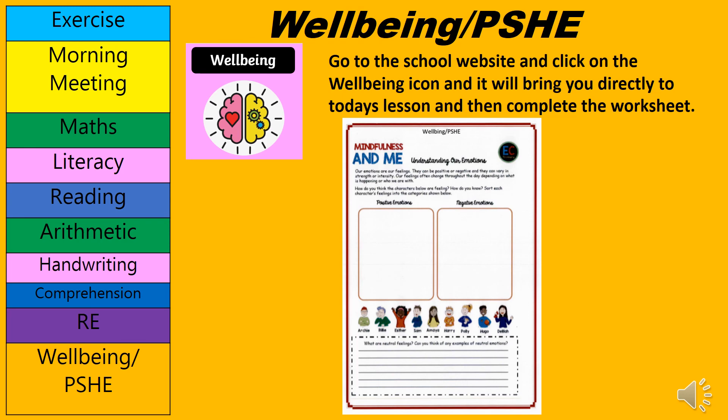For wellbeing and PSHE, we are going to be looking at our emotions and thinking about positive emotions and negative emotions. Please go onto the school website, go to Children, Year 3, scroll down and find the wellbeing picture — it's shown with a pink background. Click on that and it will take you to today's lesson. Please complete the worksheet in your booklet after you've had a look at the lesson.